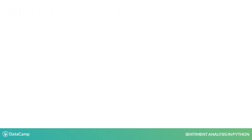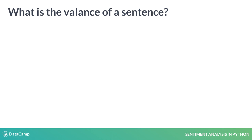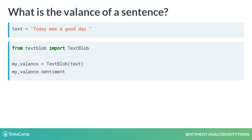We can calculate the valence score of a text using Python's TextBlob library. We continue working with our 'today was a good day' string. We import the TextBlob function from the TextBlob package and apply it to our string. A TextBlob object is like a Python string which has obtained some natural language processing skills. We can call different properties of the TextBlob object — we are interested in its sentiment, so we call sentiment on our TextBlob.